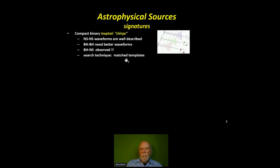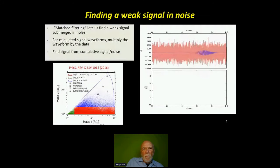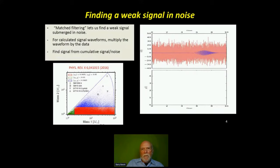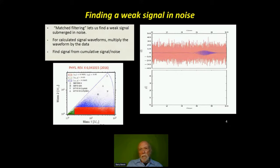The search technique that we use is match templates. The idea is to pull a gravitational wave signal out of substantial background noise. With match filtering, you can actually pull a signal that's smaller than the noise level by multiplying the product of the noise and the known shape signal. In our case, the known shape signal is templates, which we calculate in advance using general relativity.